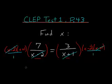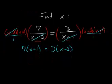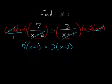On the left side of the equation, we're left with 7 times x plus 1, and on the right, we're left with 3 times x minus 2. Now we just have to distribute the 7 and the 3.